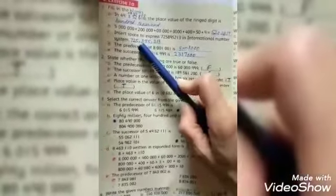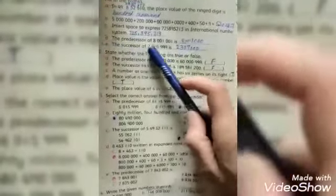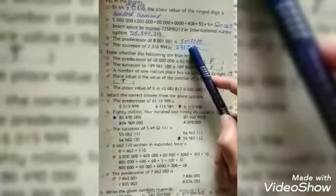So every three digits will have a comma. Part D, the predecessor of 8001001 is... we have a predecessor, the previous digit is 800100.